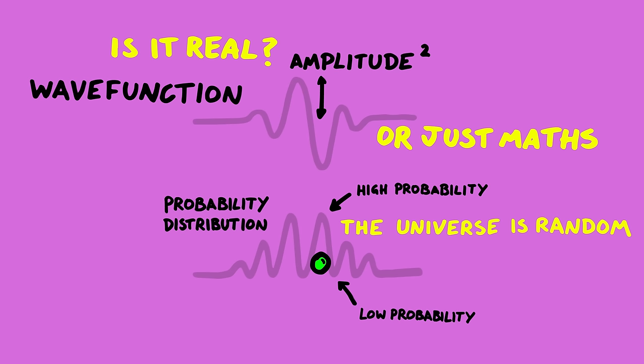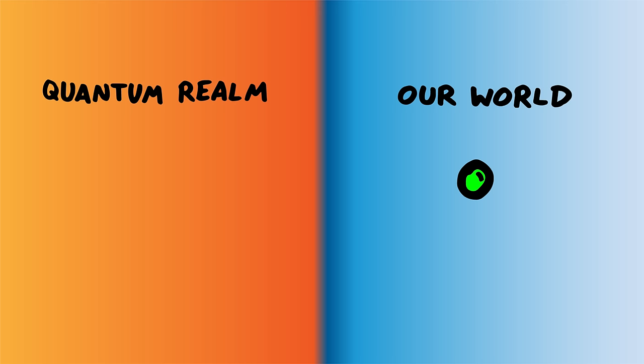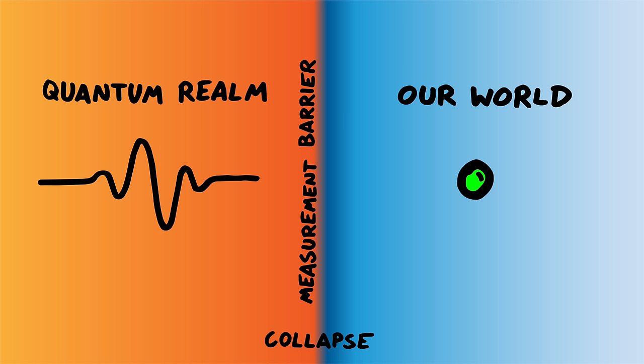No one's ever seen a quantum wave, because whenever we measure an electron, all we ever see is a point-like electron particle. So there's like this hidden quantum realm where the waves exist, and then the world we can see, which is where all the waves have turned into particles. And the barrier between these is a measurement. We say that a measurement collapses the wave function, but we don't actually have any physics to describe how the wave collapses. This is a gap in our knowledge that we've dubbed the measurement problem, and this is one of the things that Feynman was referring to with his quote.